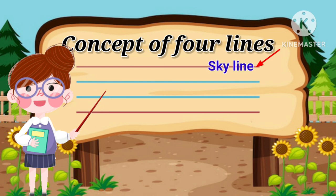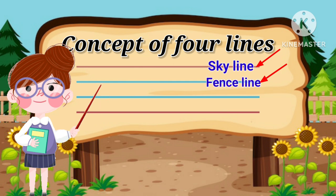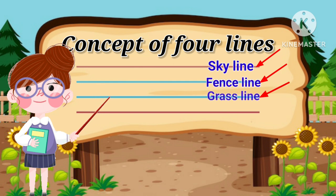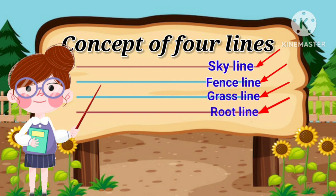The first line is the skyline, the second line is the fence line, the third line is the grass line, and the fourth line is the root line.